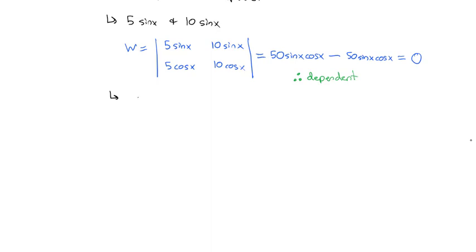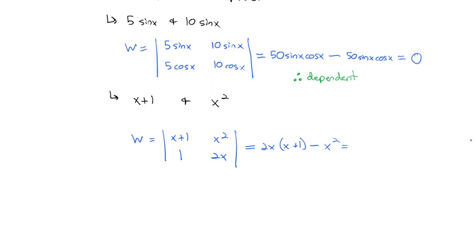Sometimes it's not obvious whether functions are independent or dependent. Let's try x + 1 and x². The Wronskian is the determinant of x+1 and x² in the first row, with derivatives 1 and 2x in the second row. Multiplying the diagonals: 2x(x+1) minus 1 times x², which gives 2x² + 2x − x² = x² + 2x. Since x² + 2x is not equal to 0 for almost all values of x, these two functions are linearly independent.